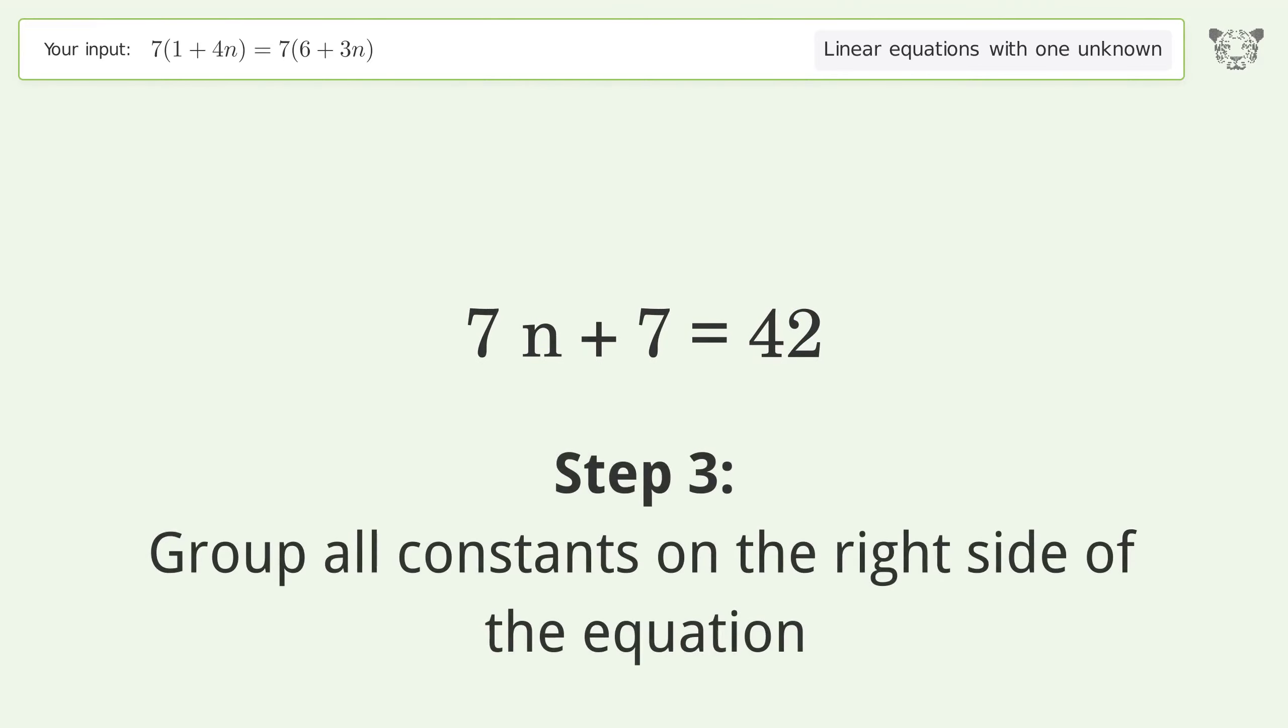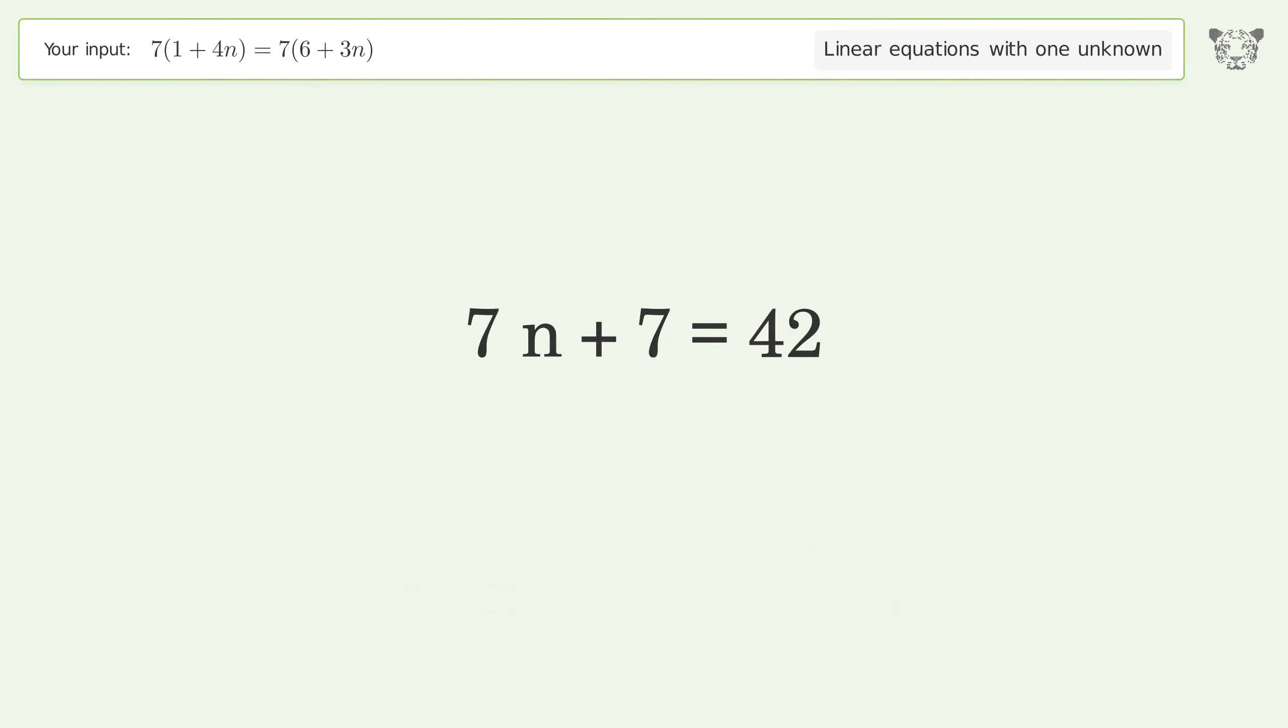Group all constants on the right side of the equation. Subtract 7 from both sides. Simplify the arithmetic.